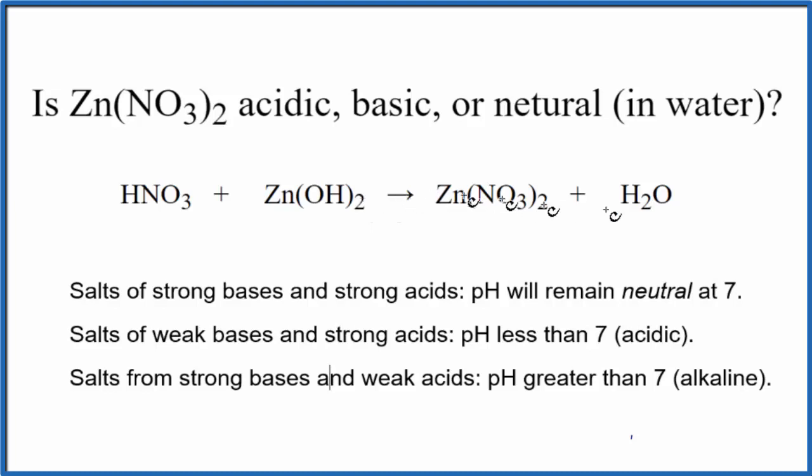And to do that, we need to look at the neutralization reaction that produces the zinc nitrate. So here we have nitric acid plus zinc hydroxide, so our acid and our base. We end up with the salt and water. The salt is zinc nitrate.